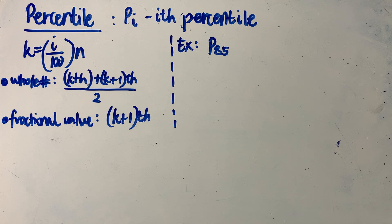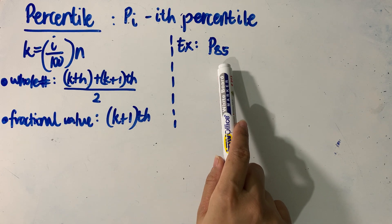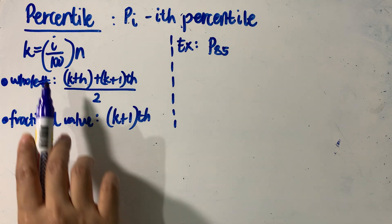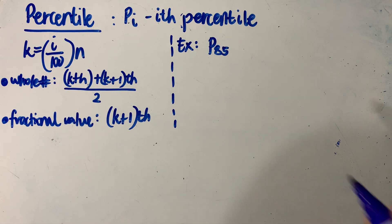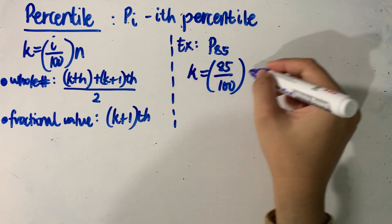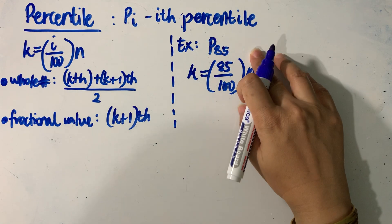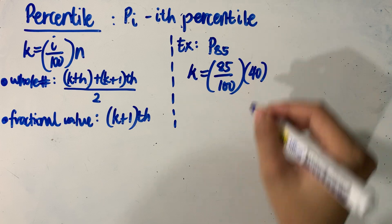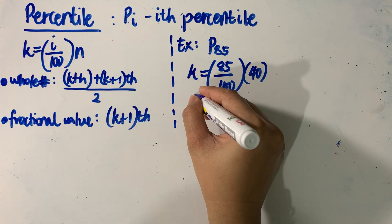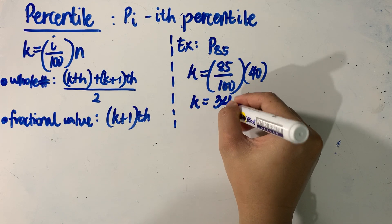Let us make use of our example, referring to our table of values. These are the lives of 40 car batteries expressed in terms of years. Let's say we are looking for the 85th percentile, so our I is equal to 85. Using our formula, K will be equal to 85 over 100 multiplied by N, where N equals 40. Simplifying, the value of K is equal to 34.